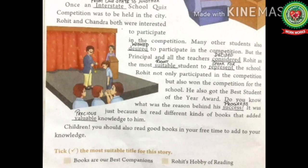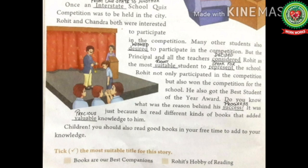Once an interstate school quiz competition was to be held in the city. Underline the word 'interstate' and write down its meaning: from one state to another. Rohit and Chandra both were interested to participate. Many other students also desired to participate. Underline the word 'desired' and write down its meaning: wished. Many children wanted to take part, and Rohit and Chandra were also interested.